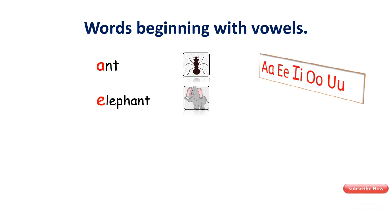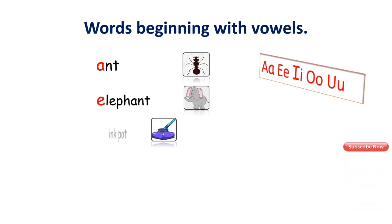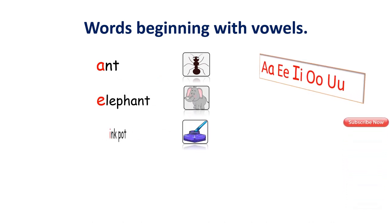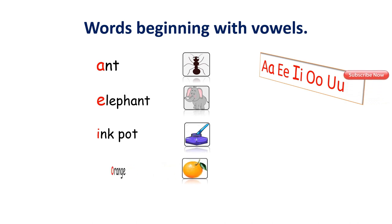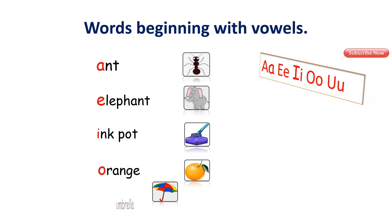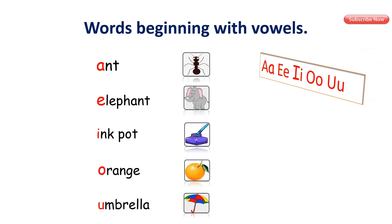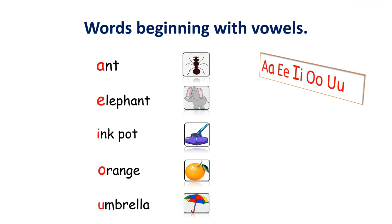Elephant — the first letter is E, it's a vowel. Inkpot — the first letter is I, it's a vowel. Orange — the first letter is O, a vowel. Umbrella — the first letter is U, it's a vowel.